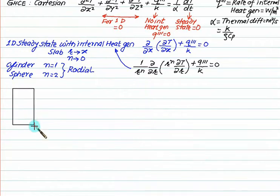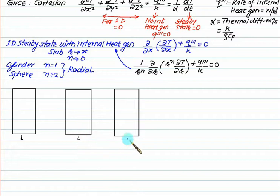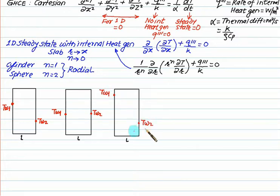We now discuss the Cartesian coordinate system for three different slab cases, each of equal width L. In the first case, two different wall temperatures are applied. In the second case, two equal temperatures exist on both walls. In the third case, TW1 is greater than TW2, and one side is insulated, while in the first two cases both sides participate in heat transfer.